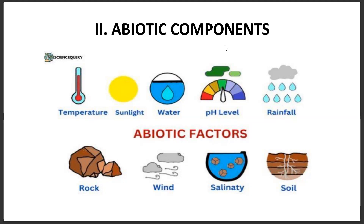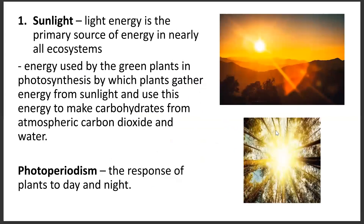So just a general overview, these are the different abiotic components of the ecosystem. We have temperature, sunlight, water, pH level, rainfall, rock, wind, salinity or the amount of salt, and also soil.